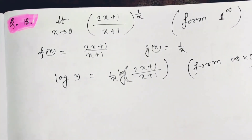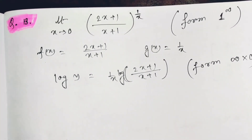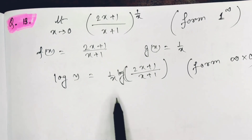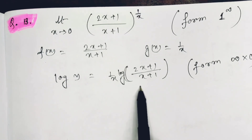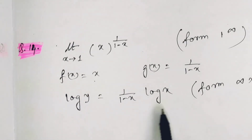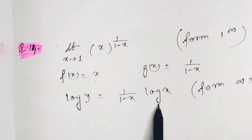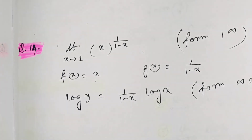There is one more question here — handled in the same way by taking log on both sides, reconstructing in 0/0 or ∞/∞ form, and solving just like the previous examples. And the final question is also solved by rewriting it in 0/0 or ∞/∞ form accordingly.